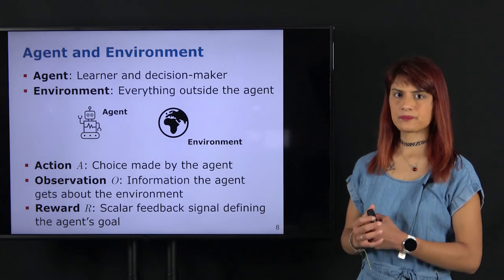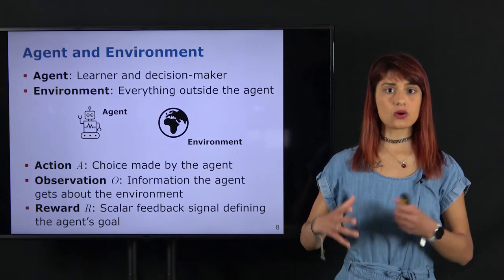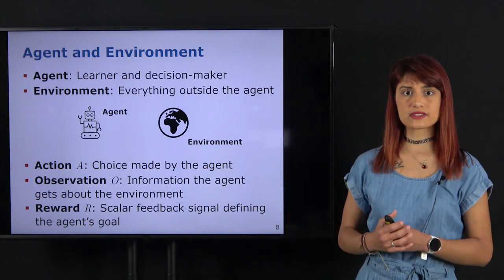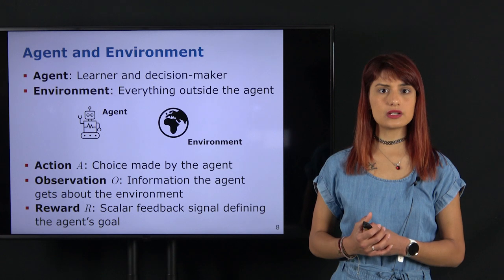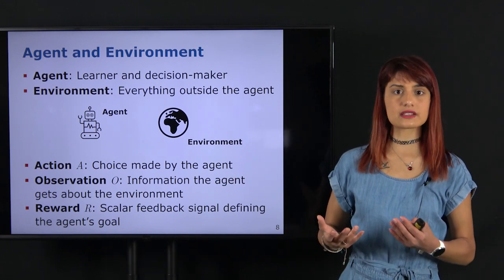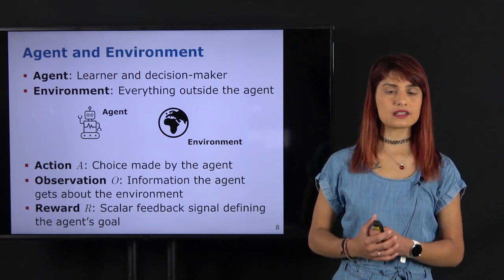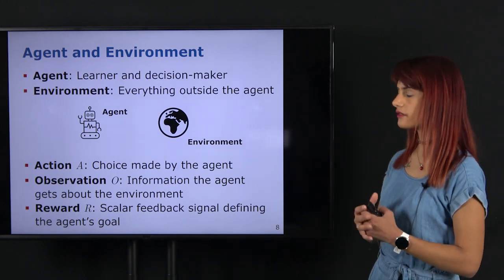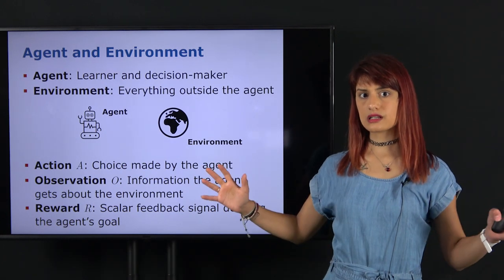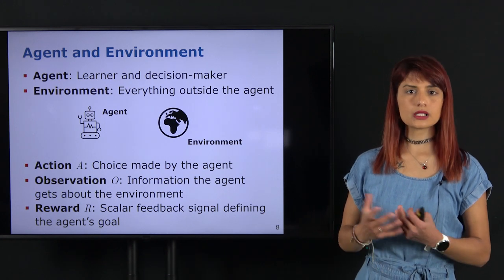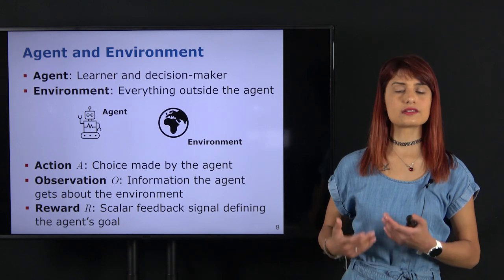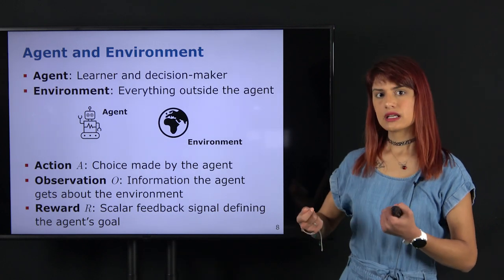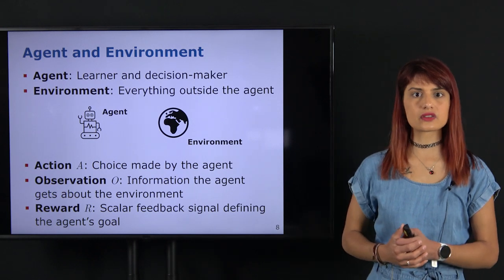Actions or decisions are the choices that agents make, and we have a finite set of these. A simple action is the agent moving from one point to another among a set of possible locations. The observation is all the information the agent receives from the environment at a particular point in time — like a depth camera image, which is essentially an observation and a snapshot of what the agent sees of the world at that point. It's important to note that other things may be happening in the environment outside the observation, such as outside the camera's field of view, but we only care about what the agent actually observes.